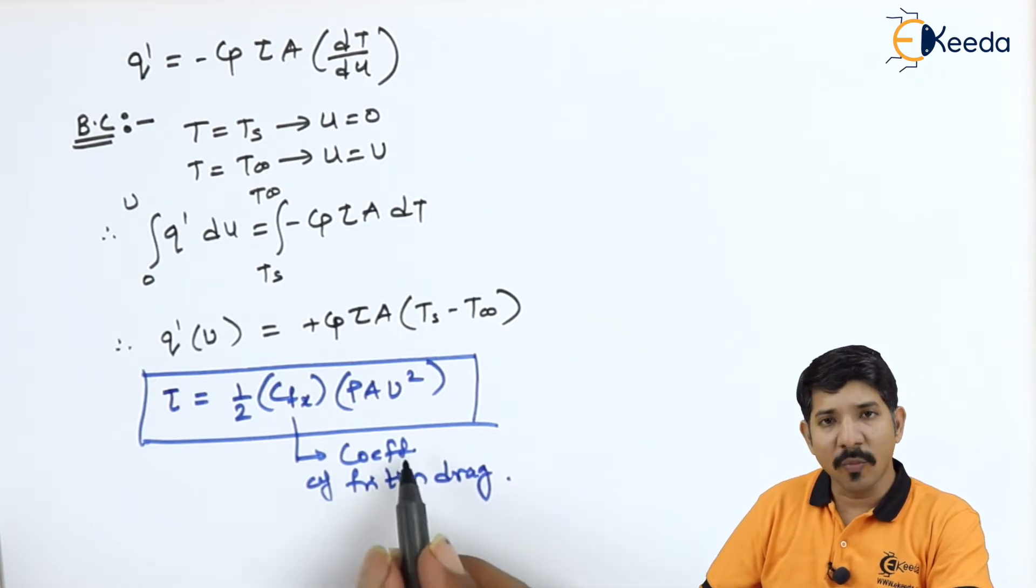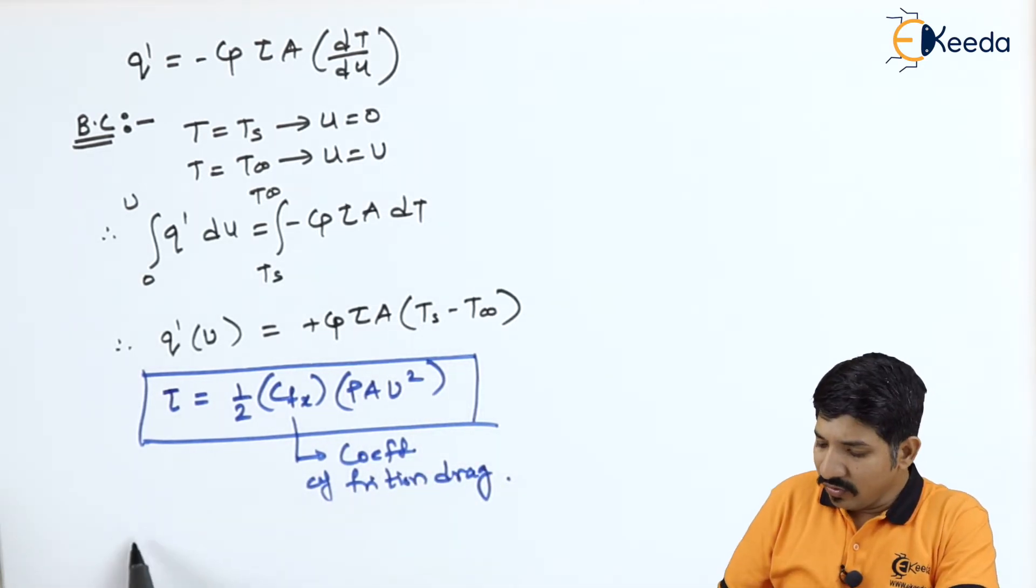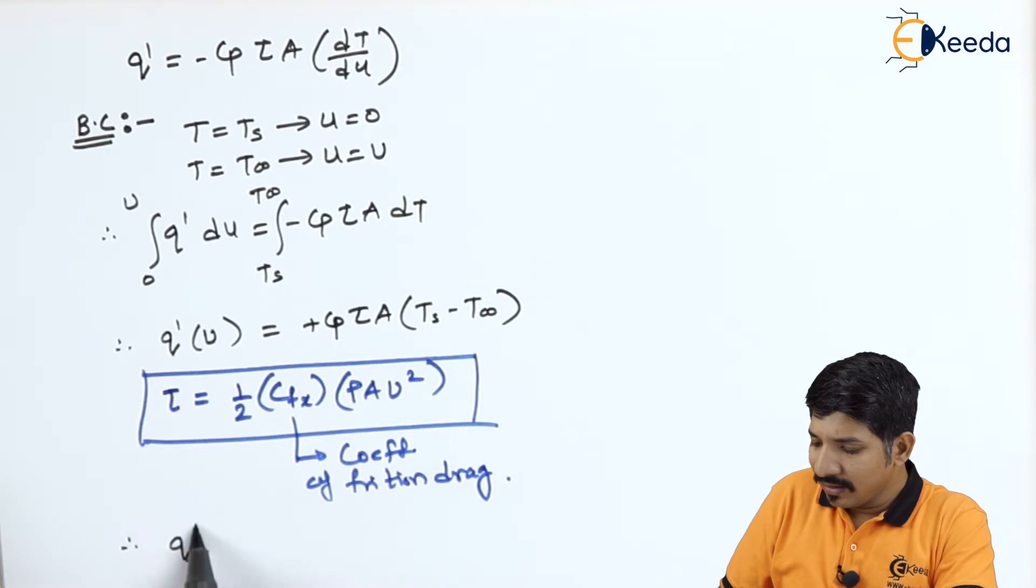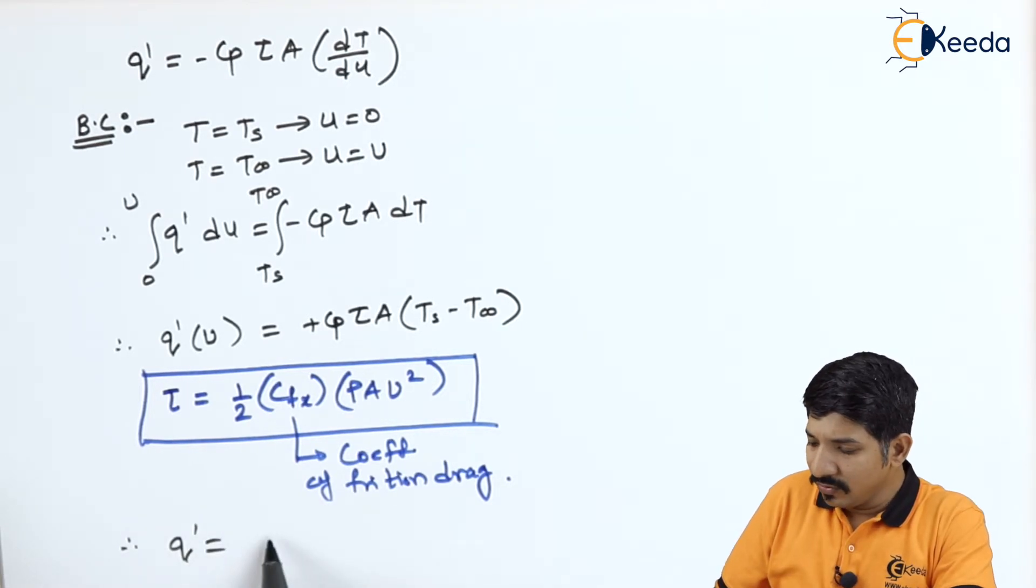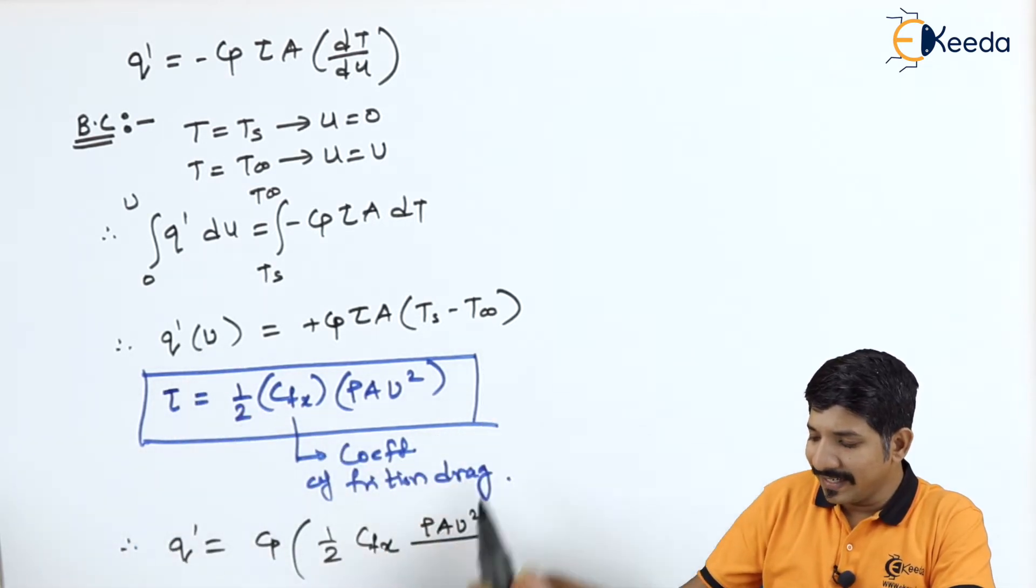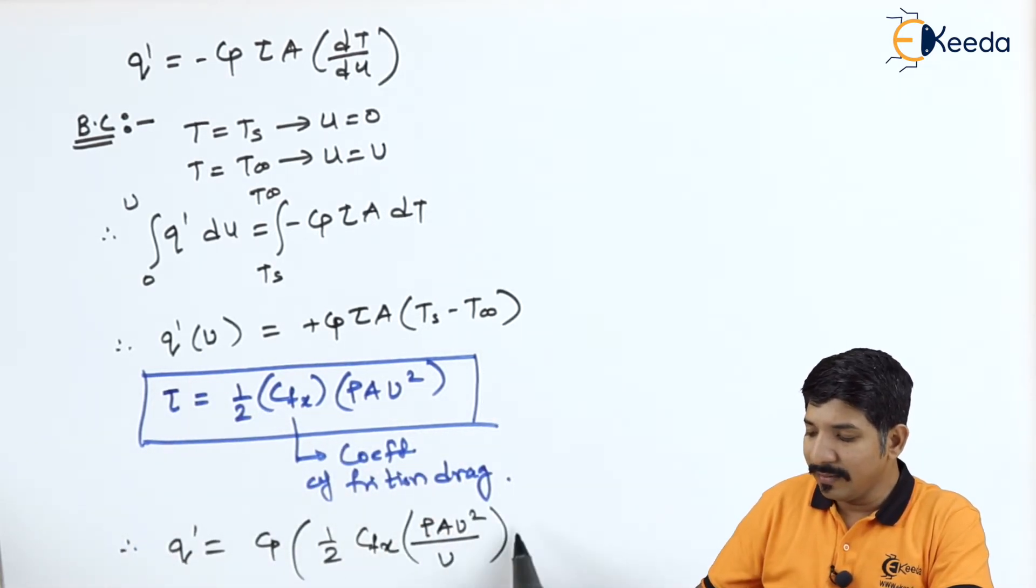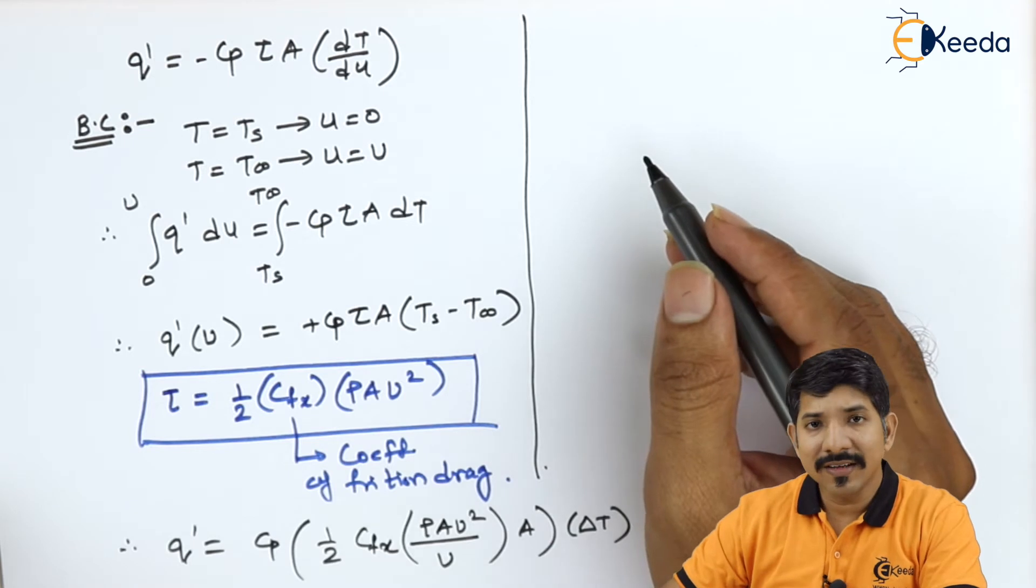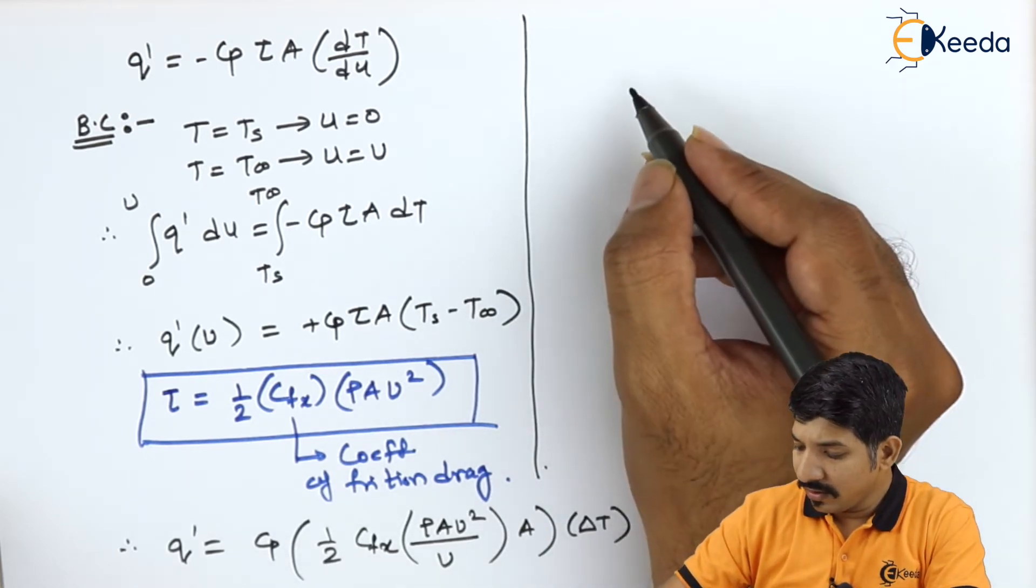This thing we must have studied in the fluid dynamics where the Cpx is called as coefficient of friction drag. So now let us accommodate this tau in the main equation. So if we do so, we can write this as q' is equal to Cp 1 by 2 Cpx rho a u square. Now this u I can take to the other side. So that comes over here divided by u into area into delta T.